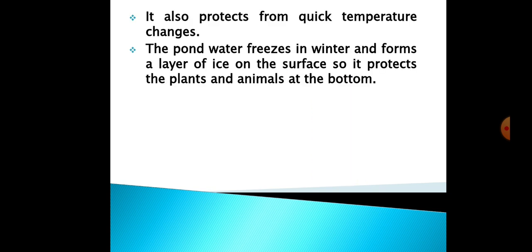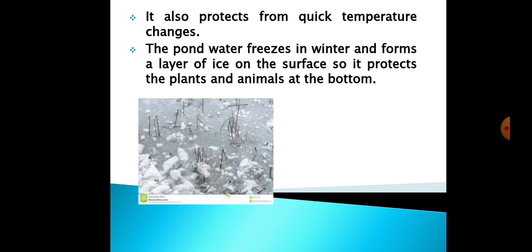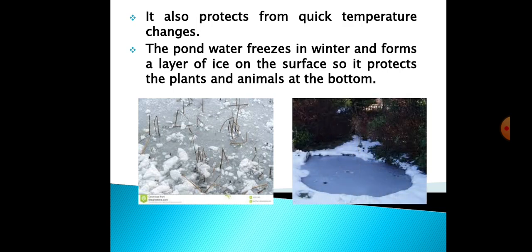The pond water also protects animals from quick temperature changes, because water temperature changes very slowly compared to air. In winter, water freezes only on the surface, and beneath that layer of ice the plants and animals at the bottom are protected from the harsh winter weather and can survive without freezing.